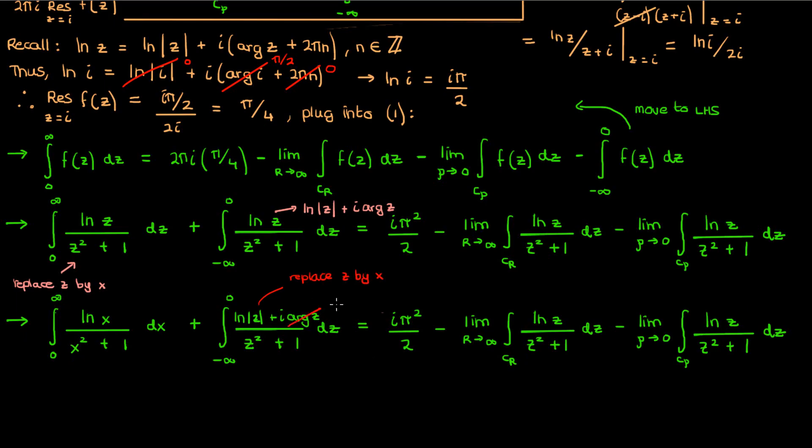However, the argument of z is now pi because we're working over the negative real axis. Again, it's pi because we've restricted our arguments to lie between negative pi by 2 and 3 pi by 2 to create our branch. The only argument of z which falls within this interval that corresponds to the negative real axis is then pi.